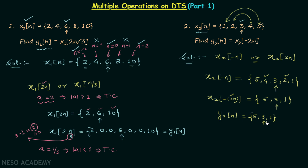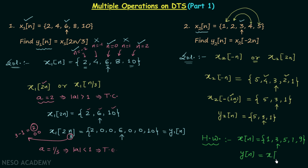Now there is one homework problem for you. The discrete time signal xn is equal to 1, 3, 5, 7, and 9, where 3 is the value of xn when n is equal to 0. You are required to find another discrete time signal yn which is equal to x(3n/2). After performing multiple operations on xn, find signal yn.